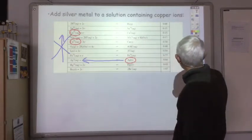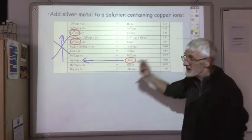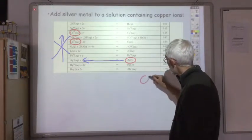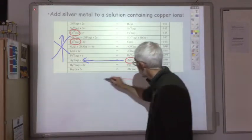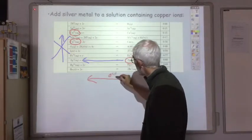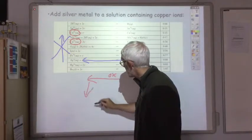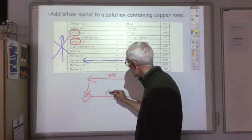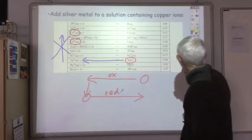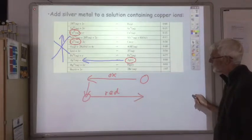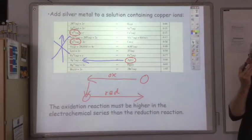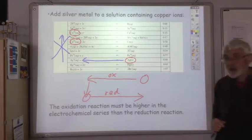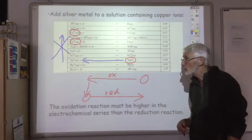In general, for displacement reactions and all redox reactions, you must start on the right-hand side: something gets oxidised, the electrons go down, and something lower is reduced. The oxidation reaction must be higher in the electrochemical series than the reduction reaction, otherwise the reaction will not take place.